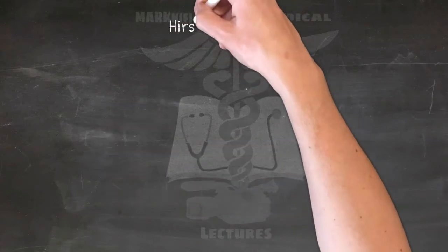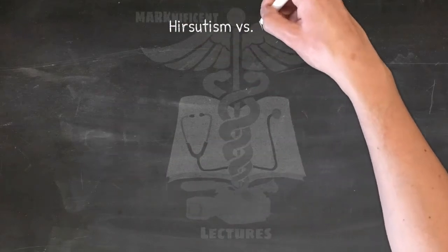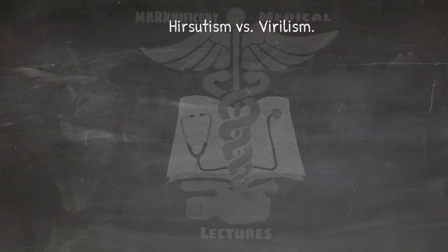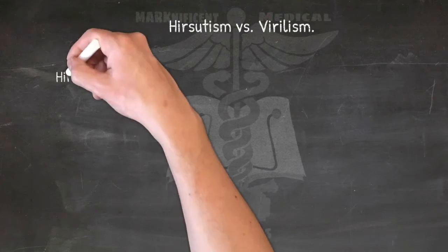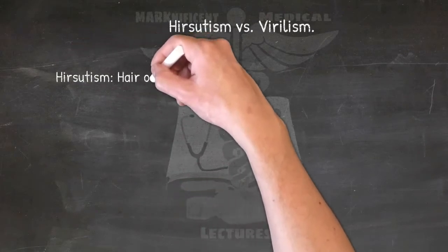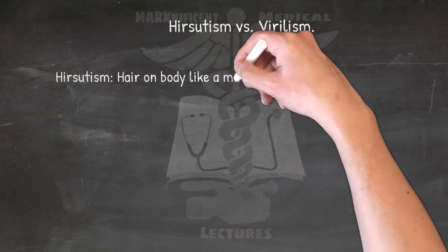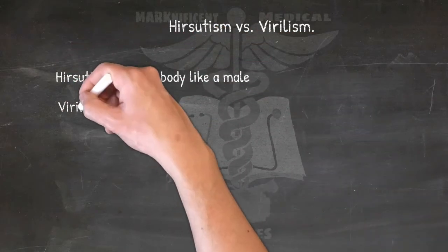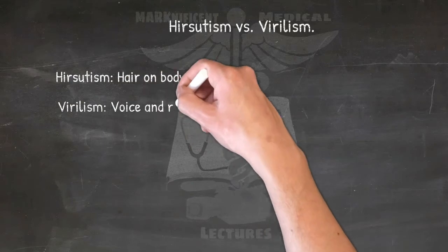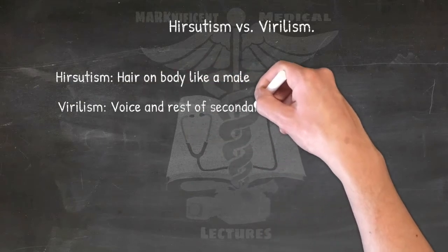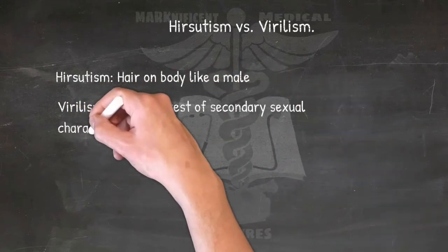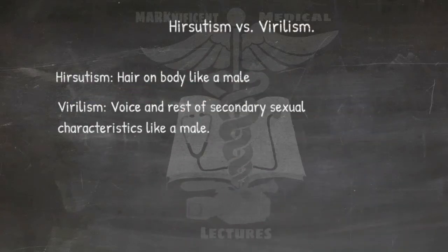Hirsutism versus virilism: hirsutism is hair on body like a male; virilism is voice and the rest of secondary sexual characteristics like a male. Both are conditions in women.